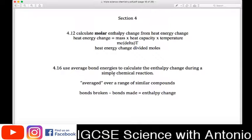By using average bond energies, you can calculate the enthalpy change during a similar chemical reaction. For this part of the syllabus, you have to understand that average bond energies are not accurate because they are averaged over a similar compound, so there will always be some difference between that and the calorimetry experiment. The equation would be: bonds broken minus bonds made equals the enthalpy change.